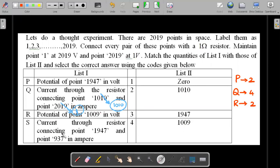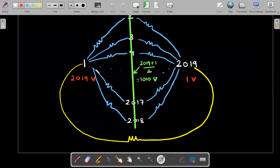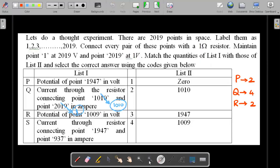Last one, current through the resistor connecting this 1947 point and 937 point. You remember all the points other than these two endpoints, all of them lie on equipotential. Since this is equipotential, potential difference between any two points and therefore any resistor would be zero, and hence the current flowing through any of those points should be zero. So that should match to one. This is it.